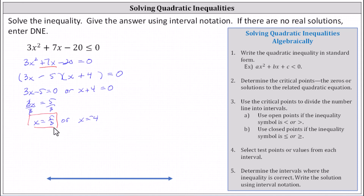So we have two critical points, which from step three we now plot on the number line. The points are either open or closed based upon the original inequality. Because we have less than or equal to, we plot these two values as closed points. We have a closed point at x = −4 and a closed point at x = 5/3. These closed points indicate that both x values are part of the solution, since substituting them gives zero ≤ 0, which is true.